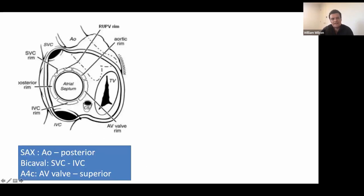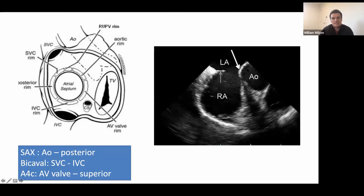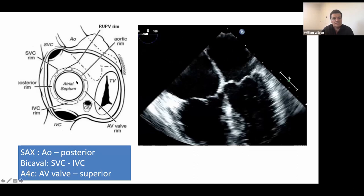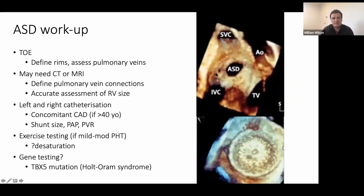It's worth understanding the ASD rims. We classically talk about aortic and posterior — at 45 degrees on TOE — then the bicaval view showing SVC and IVC, then back to zero for the AV valve rim. We usually do a TOE as workup beforehand to characterise the ASD and decide if it's closable. If you don't see all four pulmonary veins and aren't convinced, I would do a CT or MRI to confirm the anatomy, as sometimes there are five veins and anomalous drainage may be present.